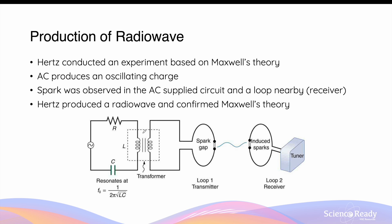In this experiment, Hertz produced a radio wave by using the AC supply to generate oscillating electrons. The radio wave was then transmitted from the first loop that had the AC supply to a receiving one, leading to the observation of the sparks.